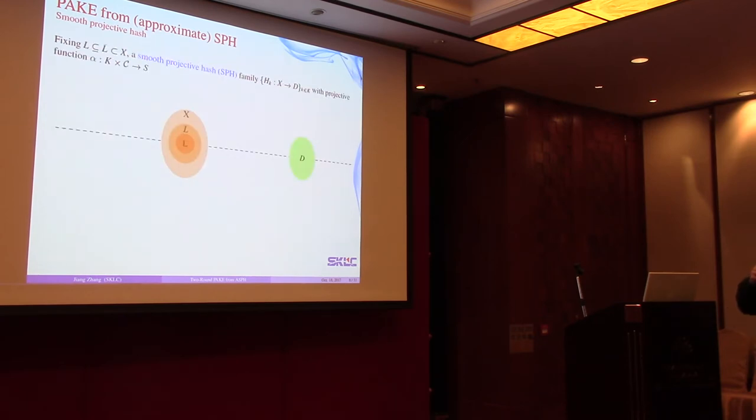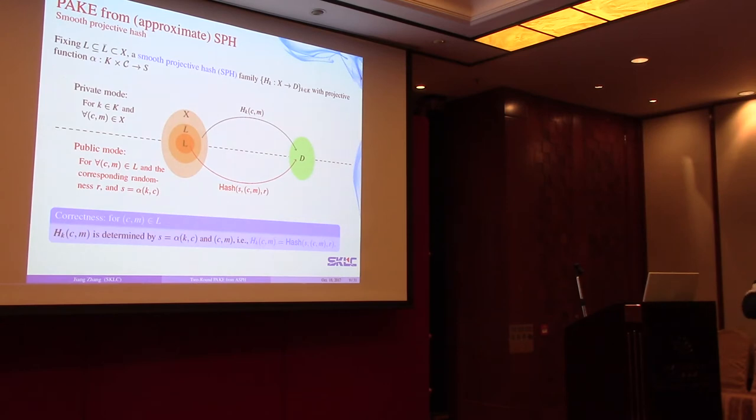A smooth projective hash over X is a keyed hash function with a projection function alpha from the key space and the ciphertext space to the projection key. Given a hashing key, one can map any element in X to a hash value. Moreover, if the input also satisfies the encryption relation, we can compute it using the randomness and the projection key. For any ciphertext-message pairs satisfying the encryption relation, the hash values computed by the two different ways must be equal. Second, for those that do not satisfy the encryption relation, the hash values computed using the hash key are uniform and random, even given the projection key alpha of K.